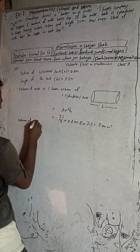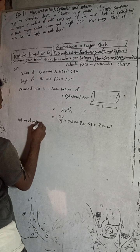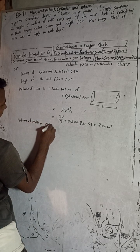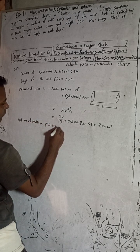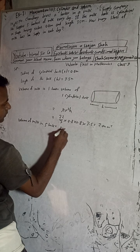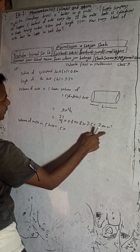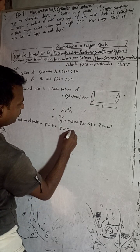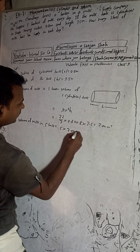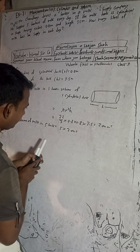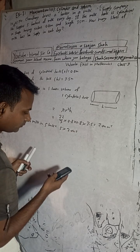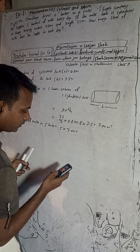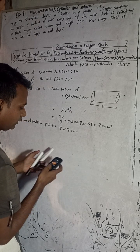For 5 tankers, we multiply by 5: 7.04 × 5 = 35.2 cubic meters.